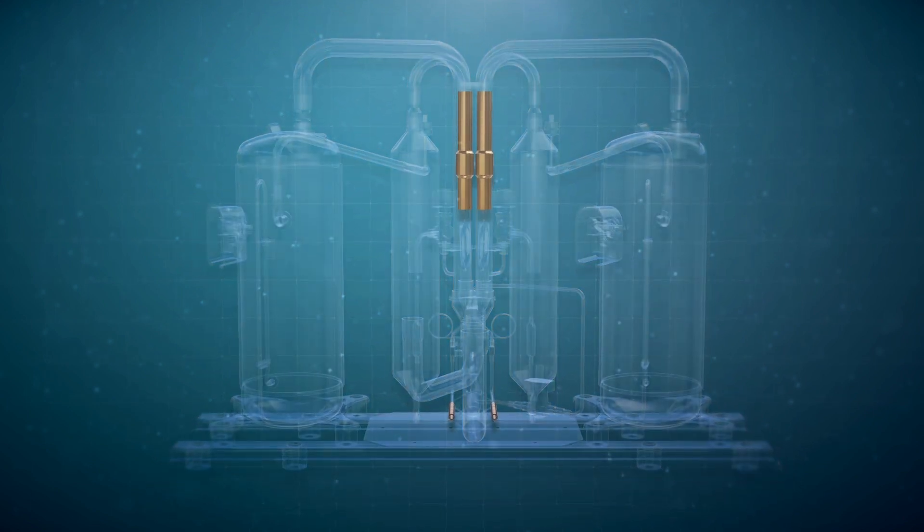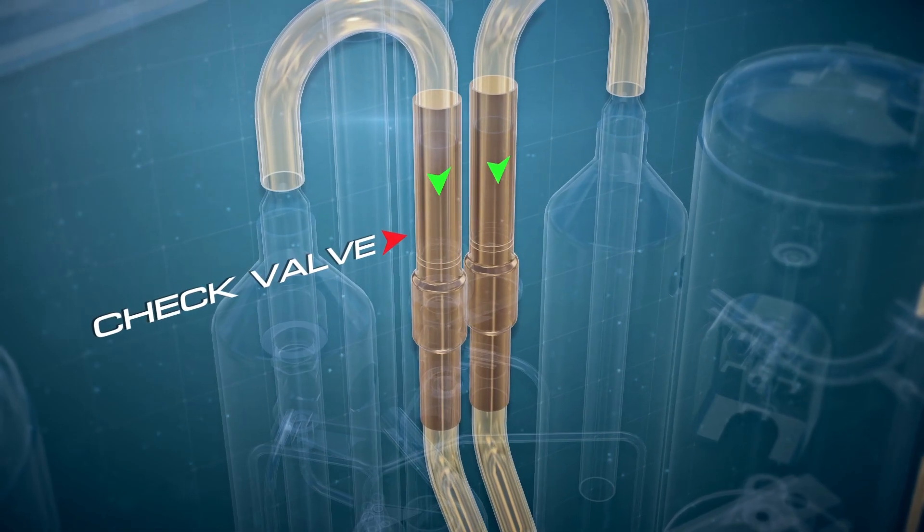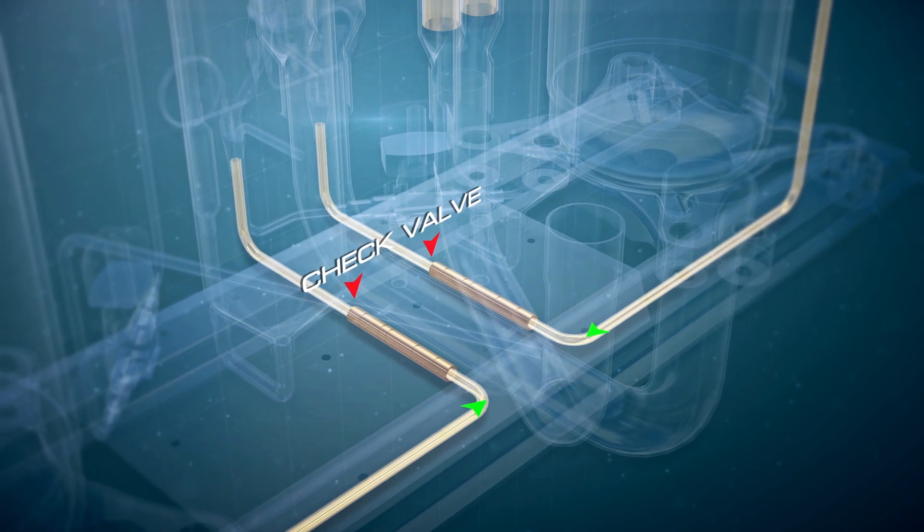Except that two check valves have to be installed per one oil separator, one at the discharge pipe and the other at the oil balance pipe, as shown.